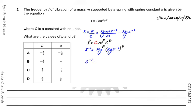Now, we use the trial and error method to find the correct answer. If option B is correct, then the units on the left-hand side and on the right-hand side will be the same. I am putting in the values given in option B. For options A, C, and D, if you solve them, you will see there is no equality — the units on both sides will not match.